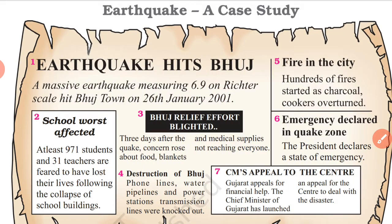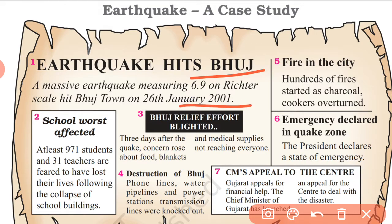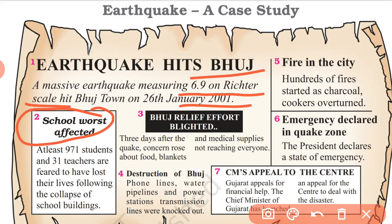Earthquake case study: Bhuj. In Bhuj, an earthquake occurred in 2001, measuring 6.9 on the Richter scale. Schools were the worst affected areas. 971 students and 31 teachers are feared to have lost their lives.